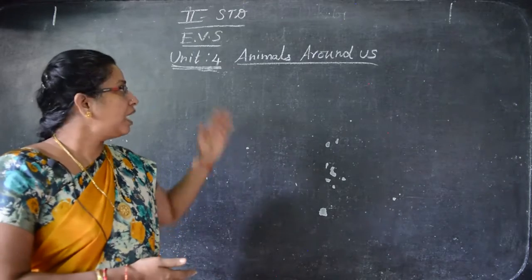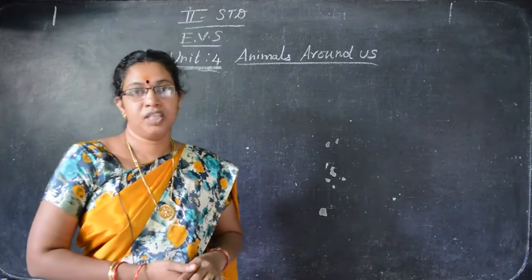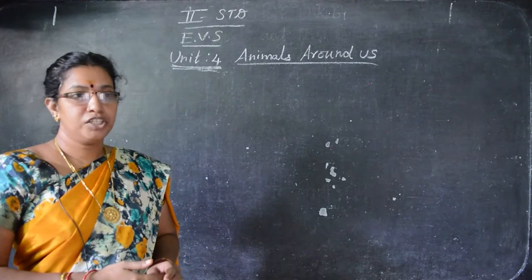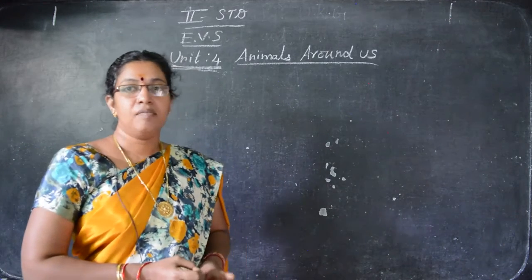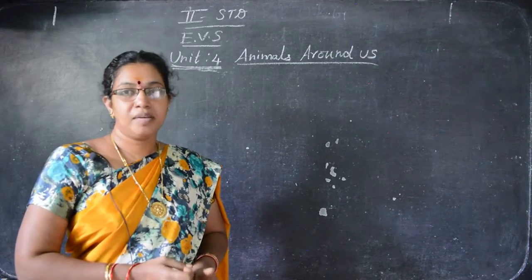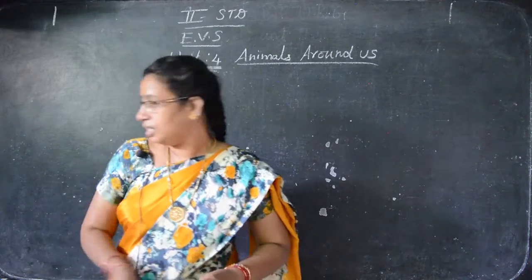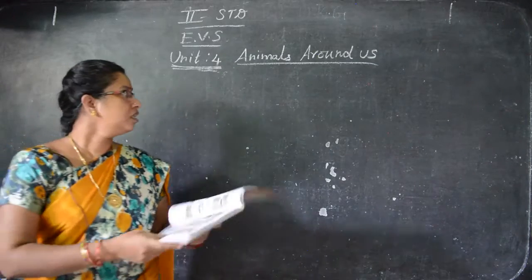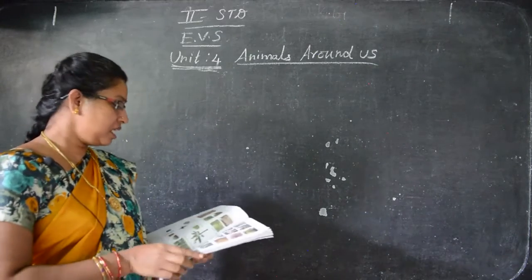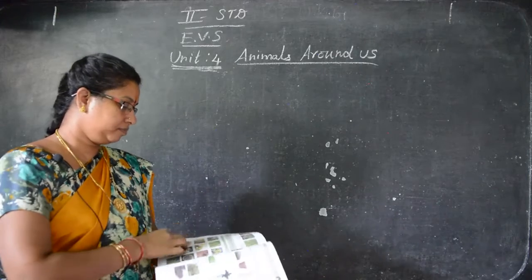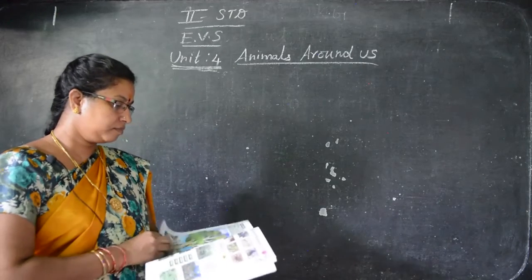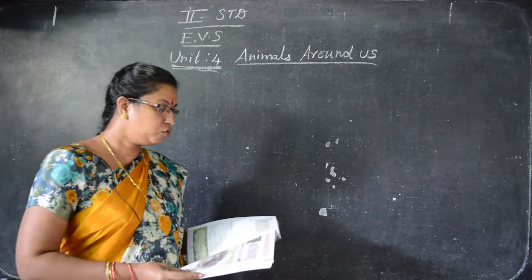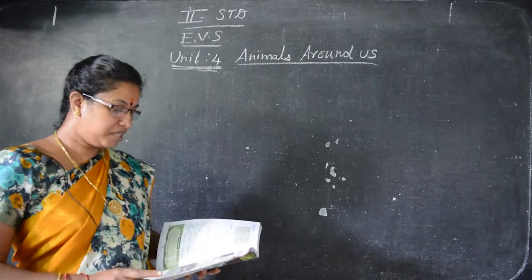Now we are going to see animals around us. In our surroundings, what animals are we seeing? We are going to see domestic animals, wild animals, and farm animals in unit 4. The lesson name is animals around us.